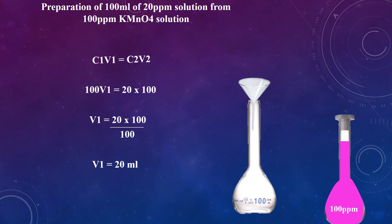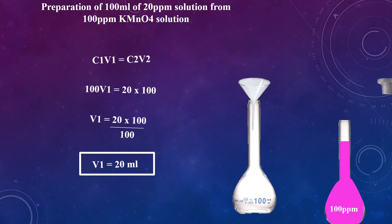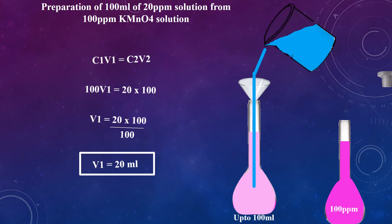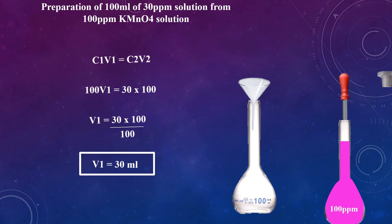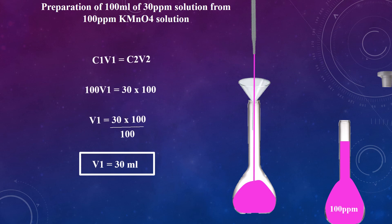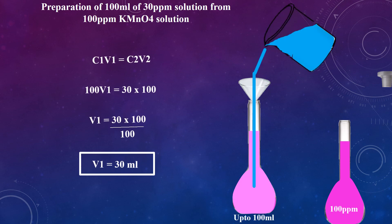To prepare 100 ml of 20 ppm solution from 100 ppm solution of potassium permanganate, take 20 ml from the 100 ppm stock solution into a 100 ml measuring flask and dilute the solution up to the mark. To prepare 100 ml of 30 ppm solution from 100 ppm stock solution of potassium permanganate, take 30 ml and dilute up to the mark. You can prepare any solution from the stock solution by following all the steps mentioned in this video.